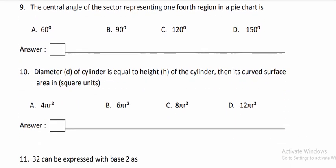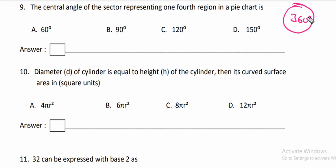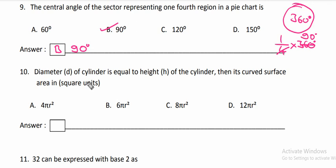The central angle of the sector representing 1/4th region in a pie chart. For finding this, we draw a circle which has a total angle of 360 degrees. For finding 1/4th of the angle, we multiply 1/4th to 360 degrees — that gives 90 degrees. So option B, 90 degrees, is the answer.